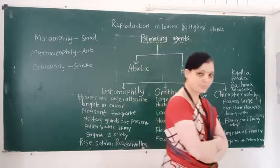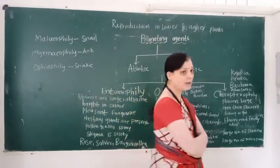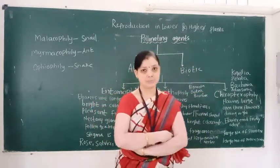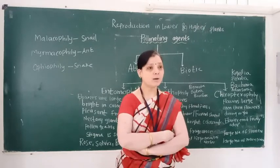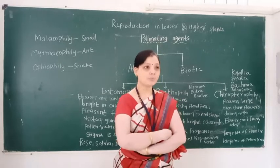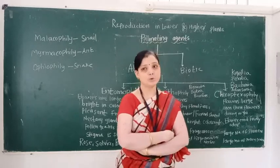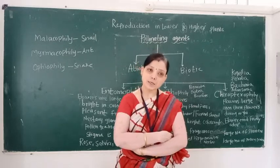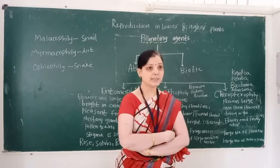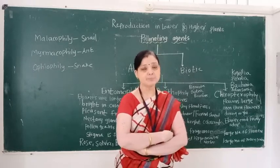Hello students. Today's topic is pollination in plants. In the previous video we learned the term 'biotic pollinating agent'. Pollination means transfer of pollen grains from anther to receptive stigma. The agents which transfer pollen grains from anther to receptive stigma are called pollinating agents. Pollinating agents are classified into two types: abiotic and biotic.